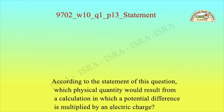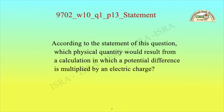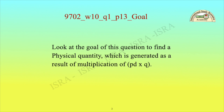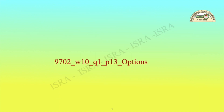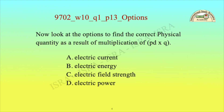According to the statement of this question: which physical quantity would result from a calculation in which a potential difference is multiplied by an electric charge? The goal is to find a physical quantity generated as a result of multiplication of PD with charge. The options are: A) electric current, B) electric energy, C) electric field strength, D) electric power.